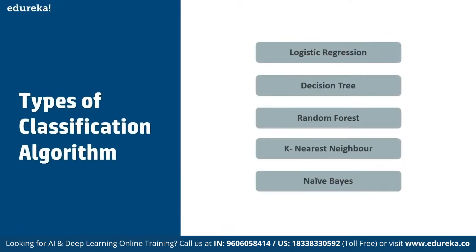In terms of types of classification algorithms, we have logistic regression, decision tree, random forest, k-nearest neighbors, and Naive Bayes.